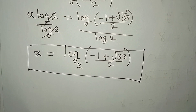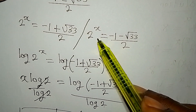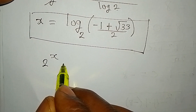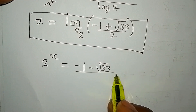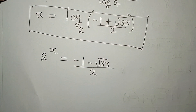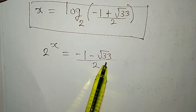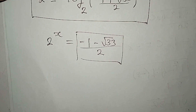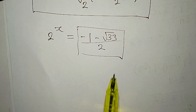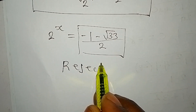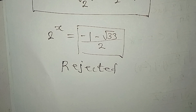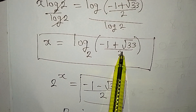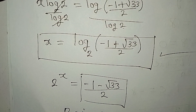Now let's consider the second alternative: 2 to the power of x equals minus 1 minus square root of 33 over 2. Since minus 1 minus square root of 33 gives a negative value, and 2 to the power of x must be positive, this solution gives no real answer and must be rejected — it can only lead to a complex solution. So the only solution is x equals log base 2 of (minus 1 plus square root of 33) over 2. Thank you for watching, and do share with your friends.